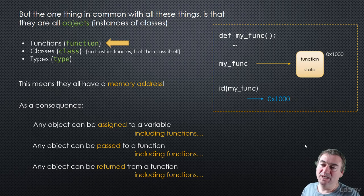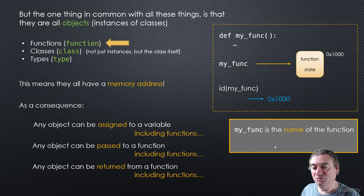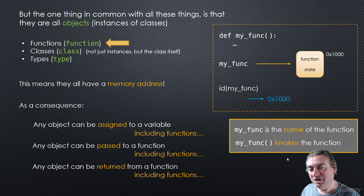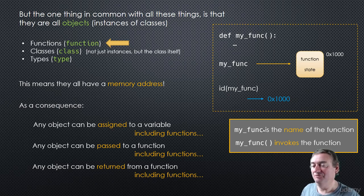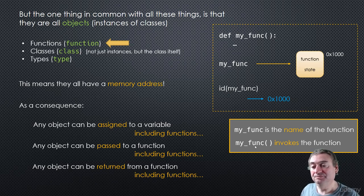One important side note: 'my_func' without parentheses is the name of the function. If you use 'my_func' with parentheses, that will invoke the function. When we're passing around my_func, we are not going to use the parentheses - we don't want to call the function, we just want to pass the function name. When you have the parentheses and possibly arguments, you're actually calling or invoking the function.